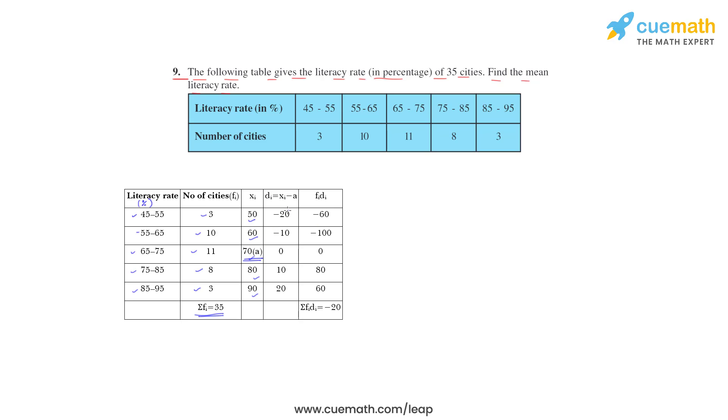Now we have to find di. di is xi minus a. So minus 20, it will be 50 minus 70 which is minus 20; 60 minus 70 is minus 10; 70 minus 70 is 0; 80 minus 70 is 10; 90 minus 70 is 20.